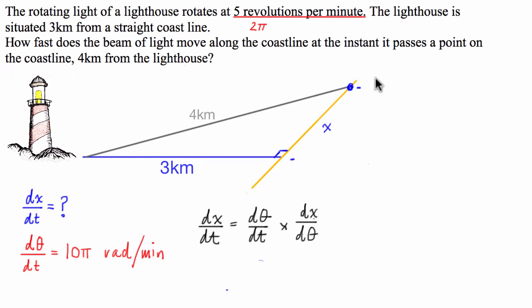The change in distance, this length here, with respect to the change in theta. Now theta is simply this angle in here. So I'm going to use these two distances and x to relate x and theta. I know that tan of theta is equal to opposite over adjacent, or x over 3. So to relate x to theta, I can say that x is equal to 3 times the tan of theta.